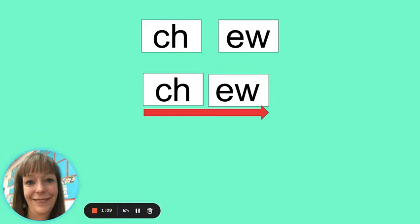This is our last one for today. Remember E-W can also say OO. Let's say the individual sounds. Ch, OO. Now blend them together. Chew. The word is chew. Like we must chew our food before we can swallow. Great job blending sounds to make words.